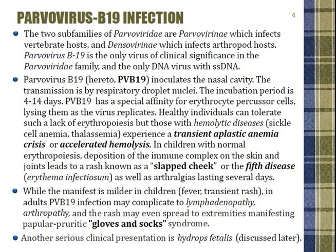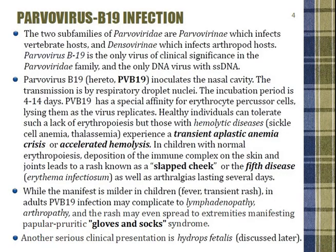The two sub-families of Parvoviridae are Parvovirinae, which infects vertebrate hosts, and Densovirinae, which infects arthropod hosts. Parvovirus B19 is the only virus of this family that has clinical significance. Because of its structure, intruding the human body by respiratory droplets, it incubates for up to 14 days.